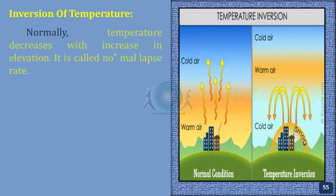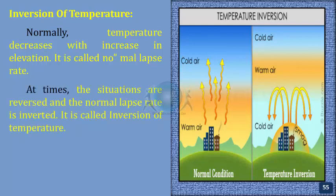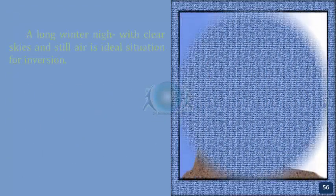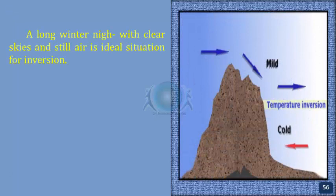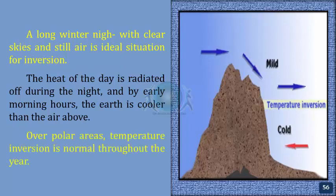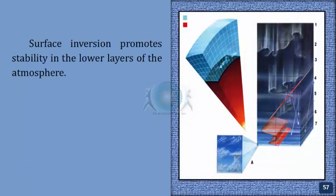Inversion of temperature. Normally, temperature decreases with the increase in elevation — this is called the normal lapse rate. At times, the situation is reversed and the normal lapse rate is inverted — this is called inversion of temperature. Inversion is usually of short duration but quite common. A long winter night with clear skies and still air is an ideal situation for inversion. The heat of the day is radiated off during the night and by early morning hours the Earth is cooler than the air above. Over polar areas, temperature inversion is normal throughout the year. Surface inversion promotes stability in the lower layers of the atmosphere.